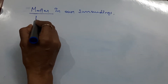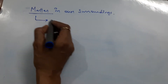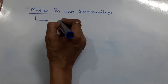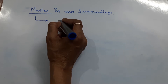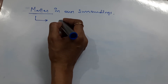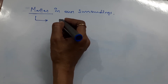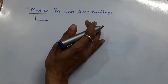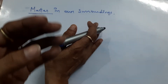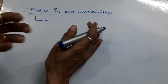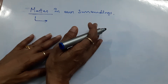What is matter? See, everything in the universe is made up of matter. Only the abstract things are not made up of matter. Abstract things are like light, electricity, joy, happiness, feelings — these types of things which you cannot touch, which you cannot see — that is known as abstract.